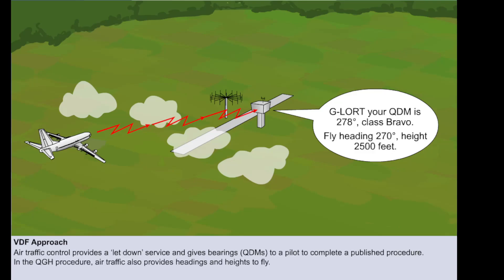In the QGH procedure, the controller obtains bearings from the aircraft's transmissions, interprets this information, and passes to the pilot headings and heights to fly, designed to keep the aircraft in the published pattern. Normally, at civil aerodromes, only the QDM procedure is available.